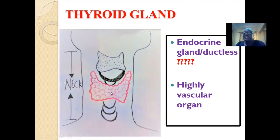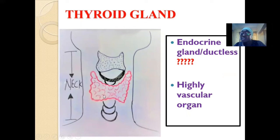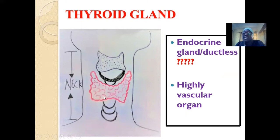The thyroid gland is also highly vascularized — it has a lot of vessels supplying blood to it. This relates to the fact that it is an endocrine gland, because it releases what it secretes directly into the blood, so it needs to be richly supplied with blood so that the substances it produces can be taken up by the blood capillaries.